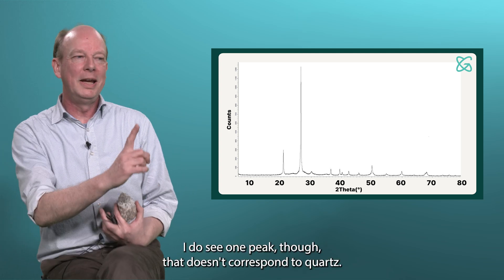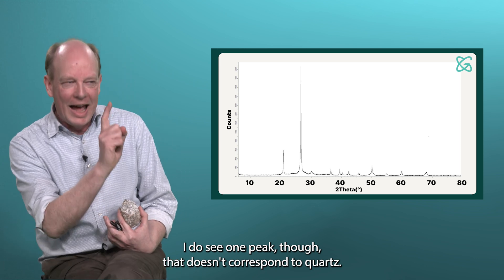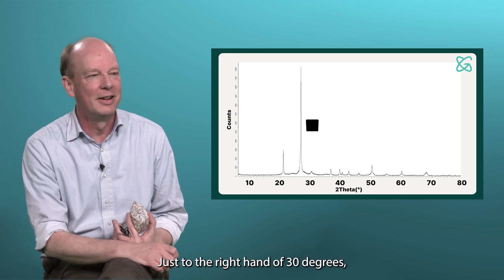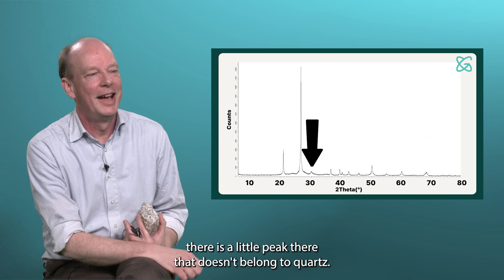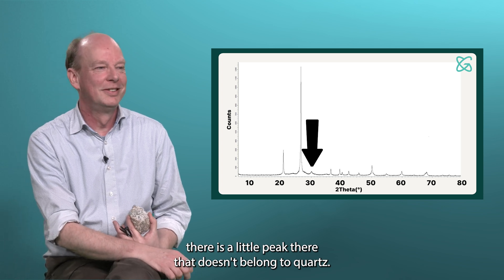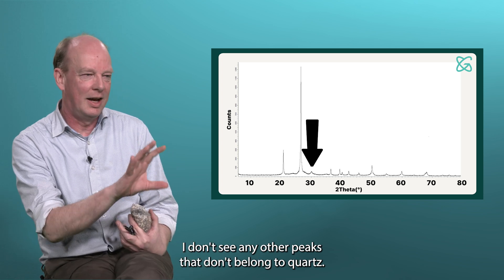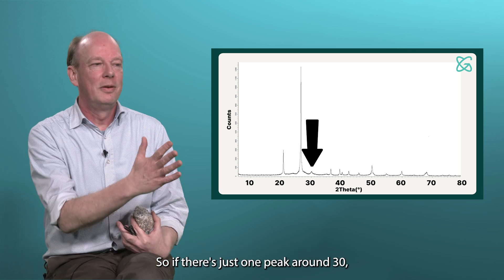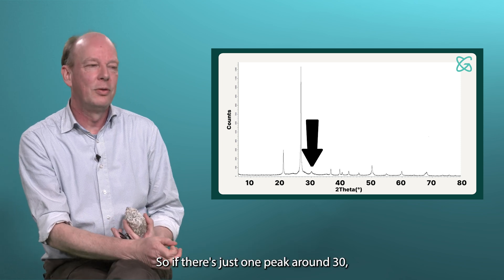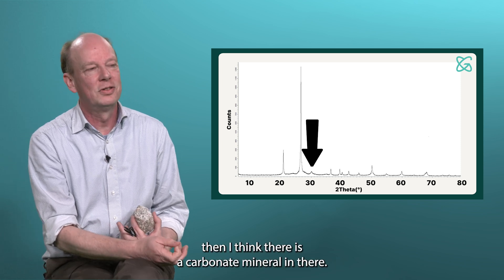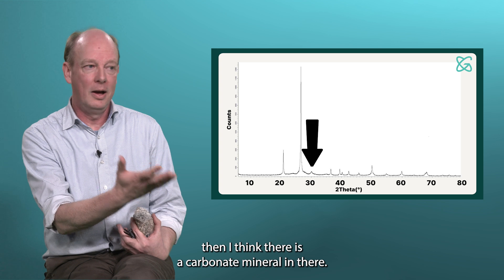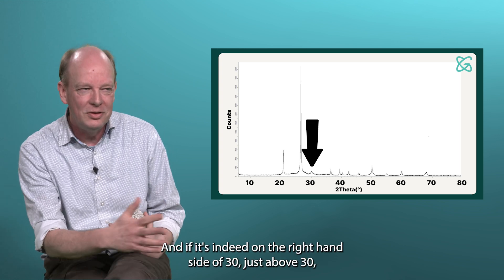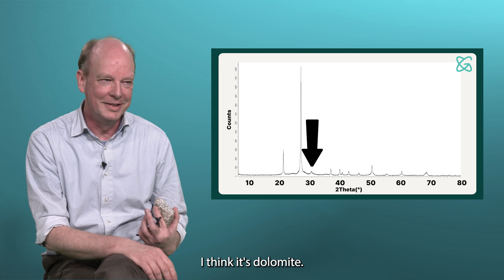I do see one peak that doesn't correspond to quartz. That's just to the right-hand side of 30 degrees — a little peak there that doesn't belong to quartz. I don't see any other peaks that don't belong to quartz. So if there's just one peak around 30, then I think there is some carbonate mineral in there. And if it's indeed just above 30, I think it's dolomite.